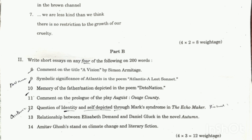The next question asks to comment on the prologue of the play 'August: Osage County.' In fiction, the Echo Maker deals with Mark's syndrome, depicting psychological themes through the character Mark.